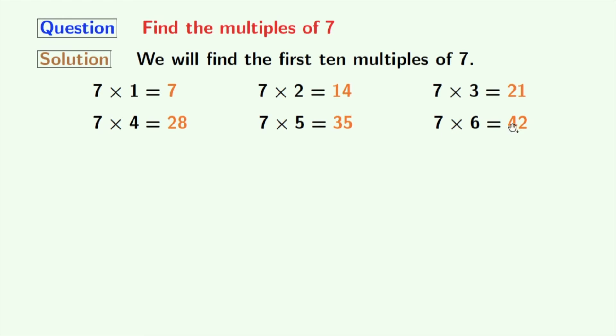42 will come if we multiply 7 and 6. Multiplication of 7 and 7 gives us 49. We will get 56 if we multiply 7 and 8.